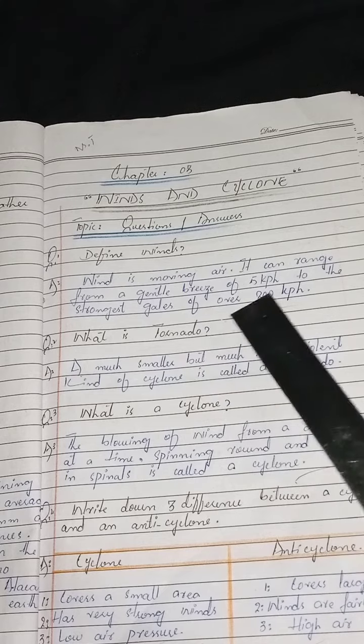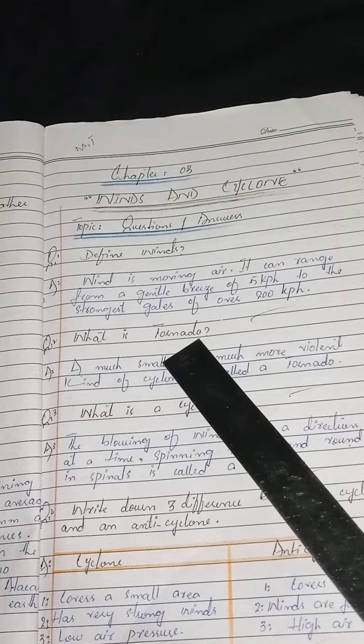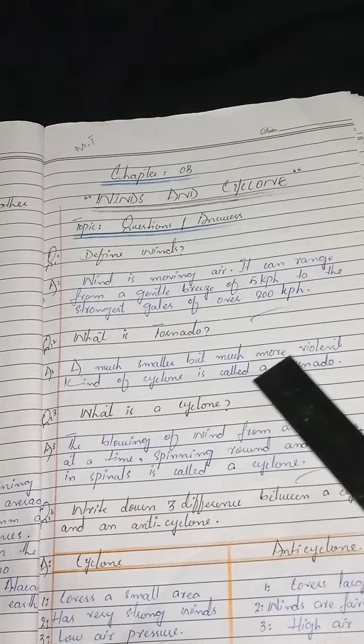Question number two: What is a tornado? Answer: A much smaller but much more violent kind of cyclone is called a tornado.